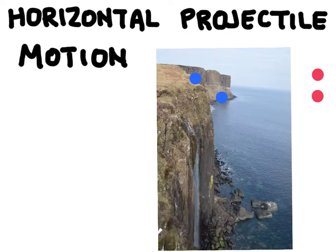Let's take another picture after another second. Again, the blue ball and the red ball have been falling at the exact same acceleration, so they're at the same vertical position after two seconds total. Taking another picture after three seconds, we can see that both the projectile motion of the blue ball and the free fall of the red ball are at the exact same vertical position, because they're both experiencing the acceleration due to gravity.